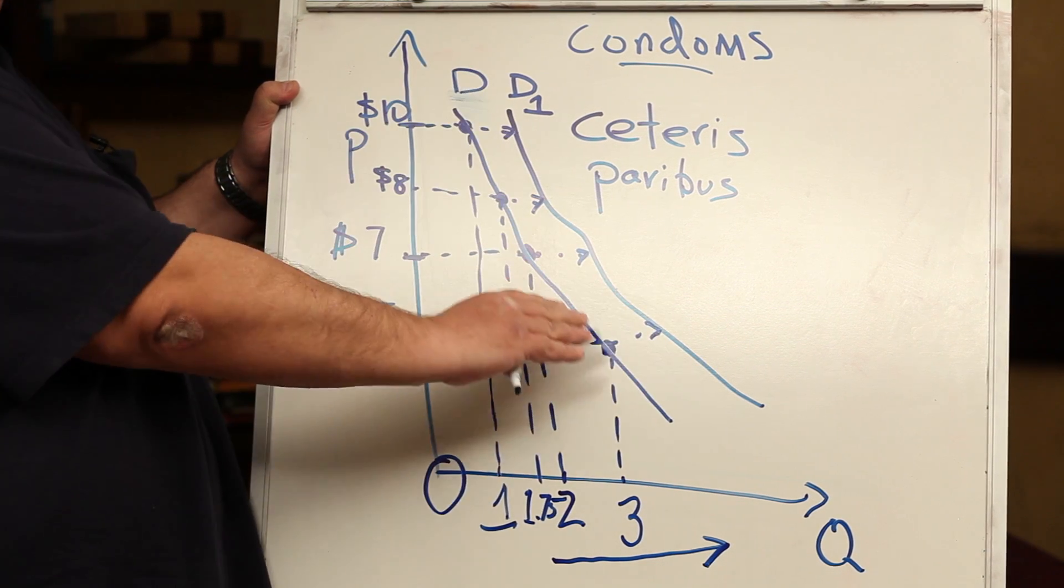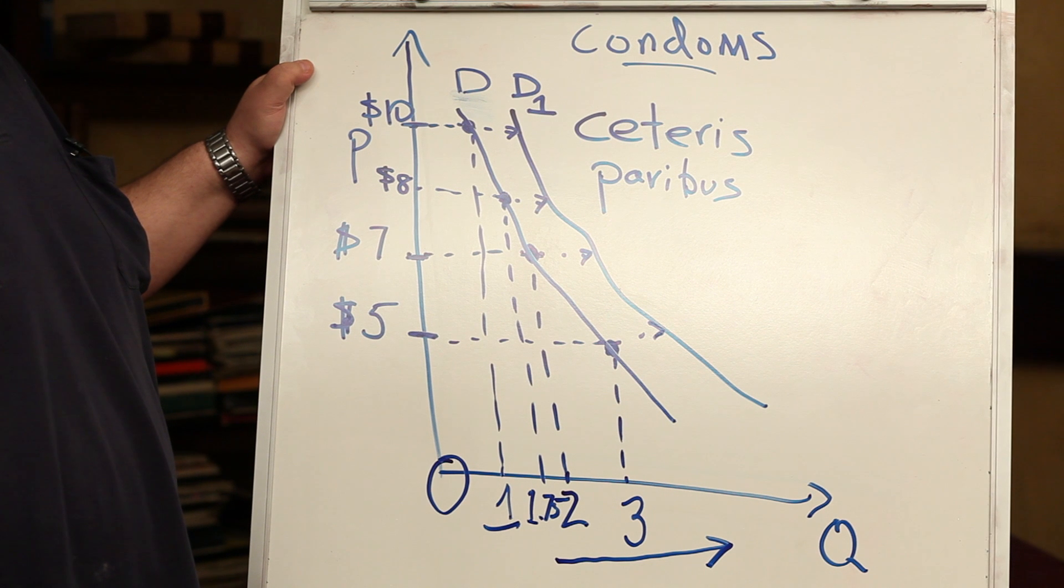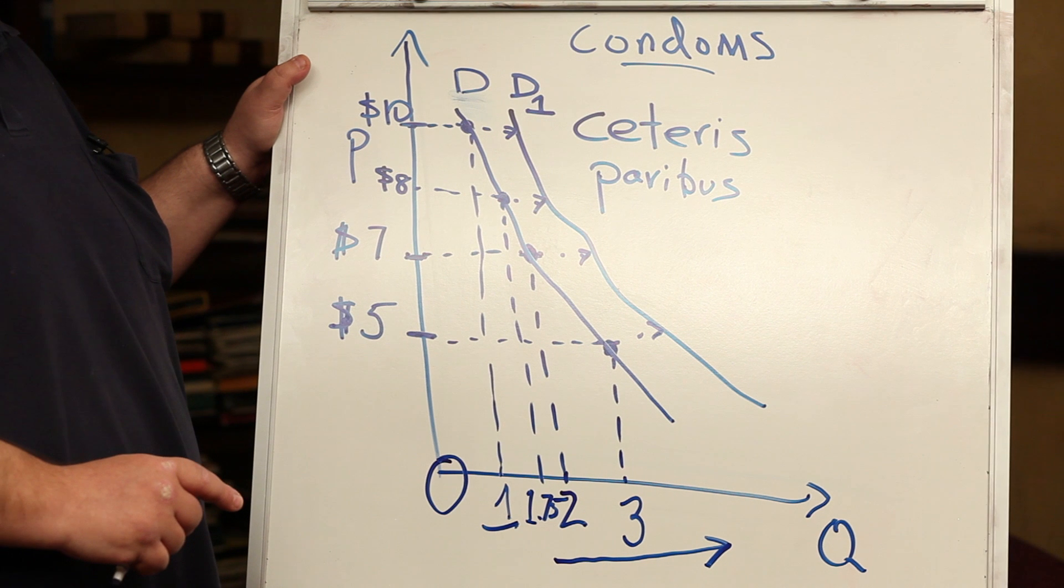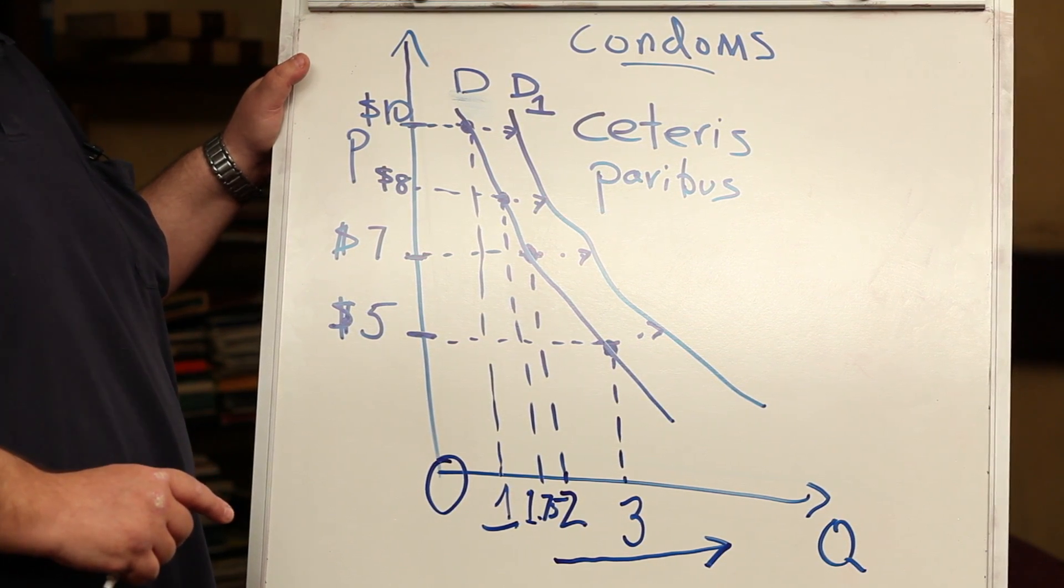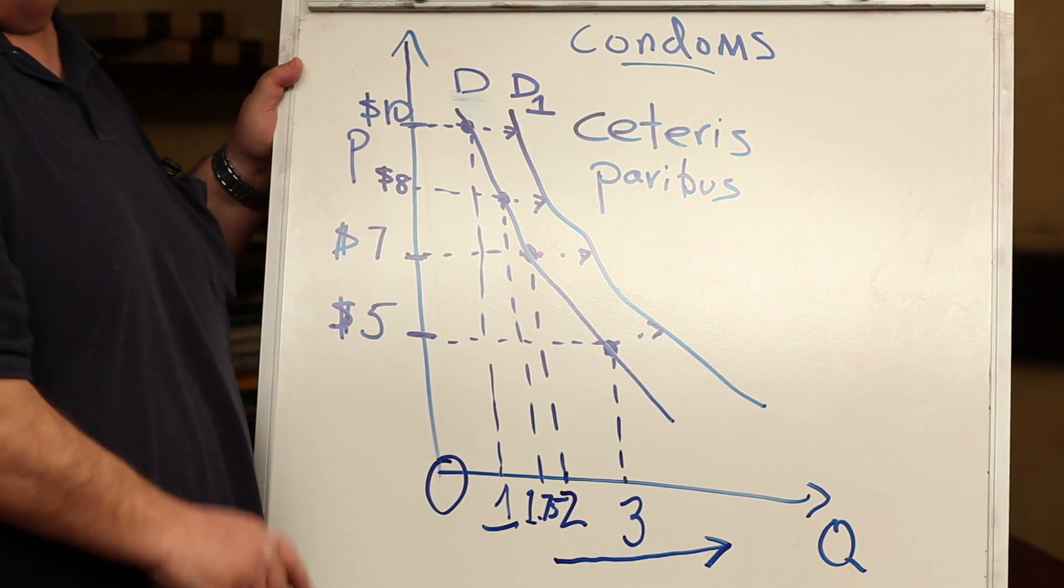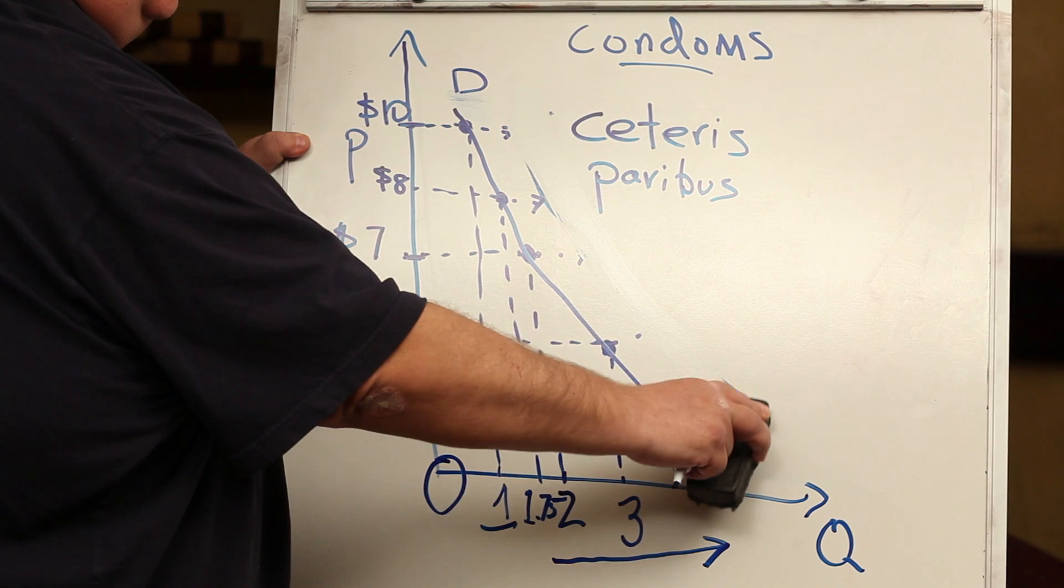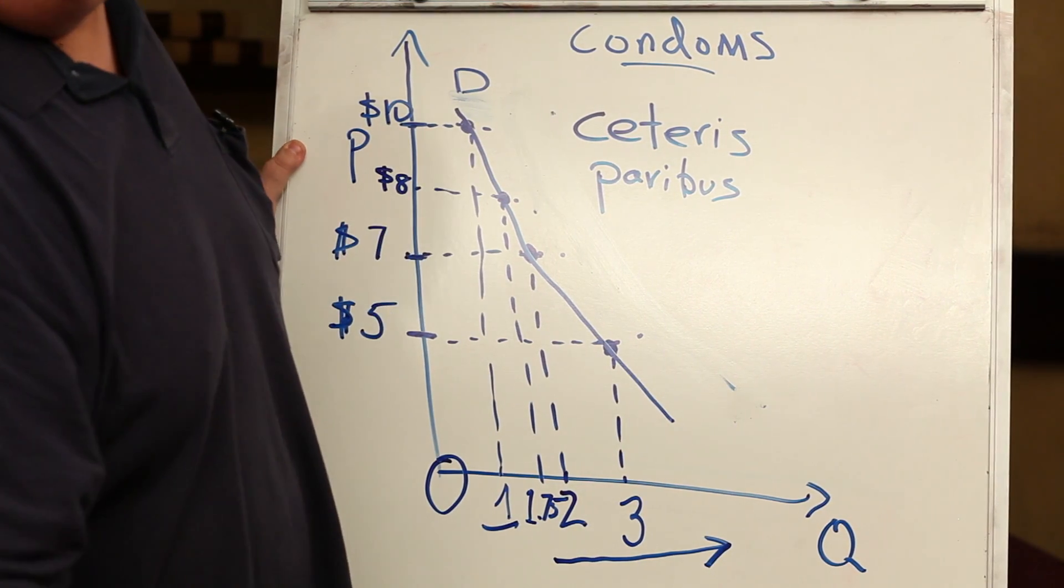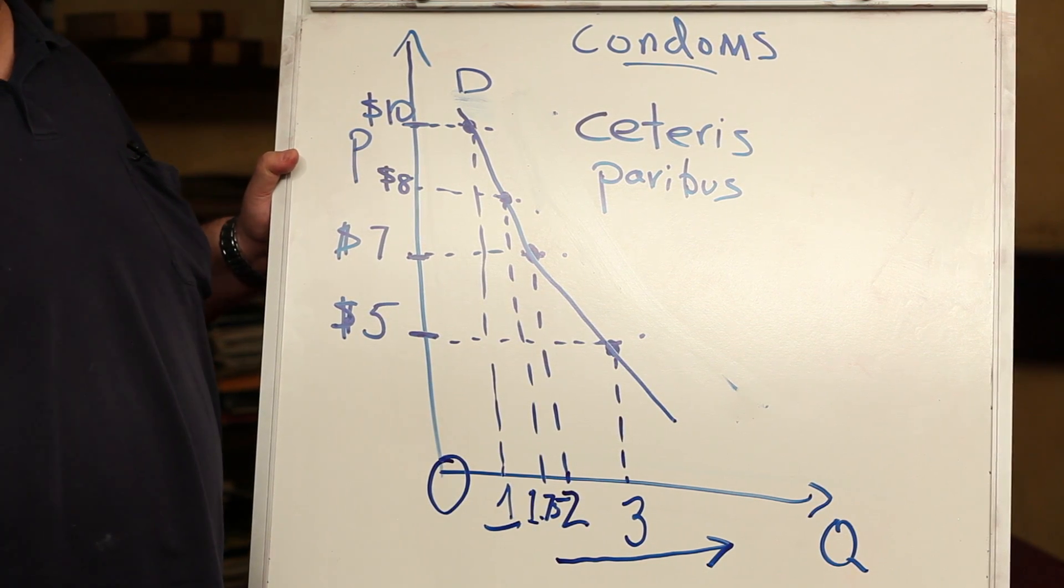We don't see that on this first demand curve. And the reason is, what did we do with your income when we drew the first demand curve? Simple. We assume that it was held constant. When it's held constant, that means that the demand curve simply shows you the relationship between price and quantity demanded, holding factors like income, ceteris paribus, constant.